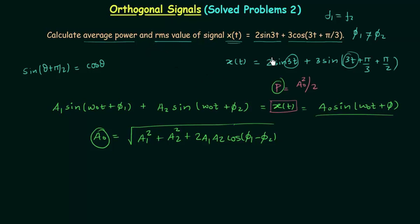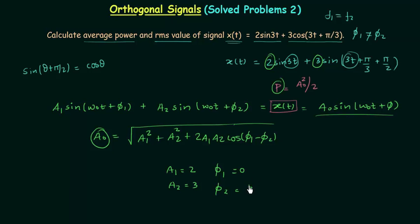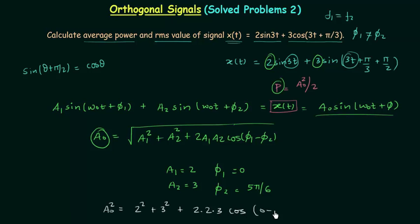From the problem, a1 = 2 and a2 = 3. φ1 = 0 and φ2 = π/3 + π/2, which equals 5π/6. Now I will put these values into the equation: a0² = 2² + 3² + 2×2×3·cos(0 − 5π/6).